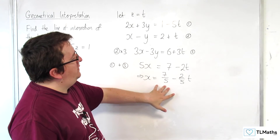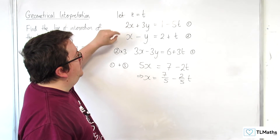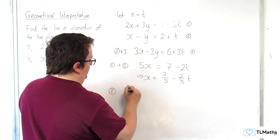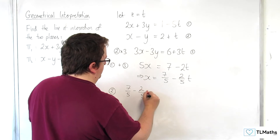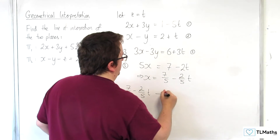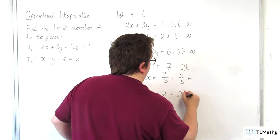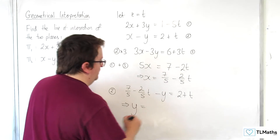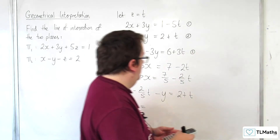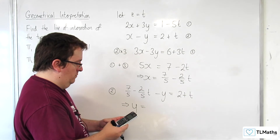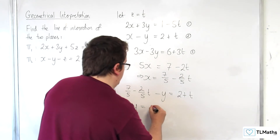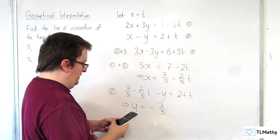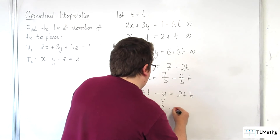I can find y by substituting x into one of our two equations — let's substitute into equation 2. So we have 7 fifths minus 2 fifths t, minus y, equals 2 plus t. Rearranging to get y: 7 fifths minus 2 equals minus 3 fifths, and minus 2 fifths minus 1 gives minus 7 fifths. So y equals minus 3 fifths minus 7 fifths t.